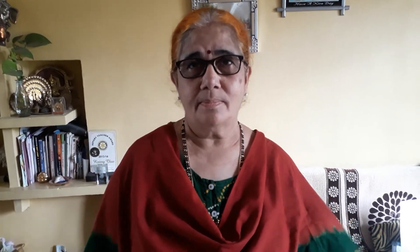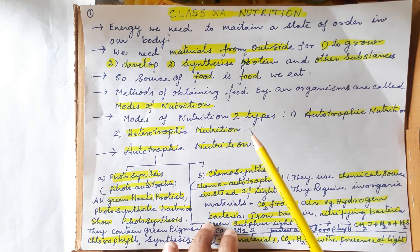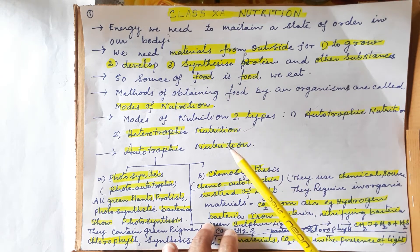Let us have a recap about nutrition. First of all, what is nutrition — you have already learned that. How do living things get their nutrition, and what types of nutrition are there? We will see these briefly, especially about autotrophic nutrition.